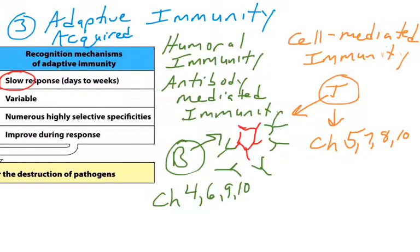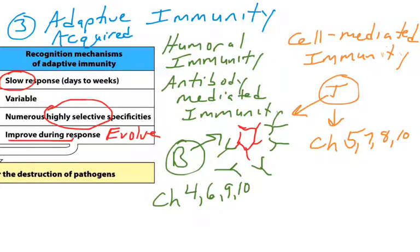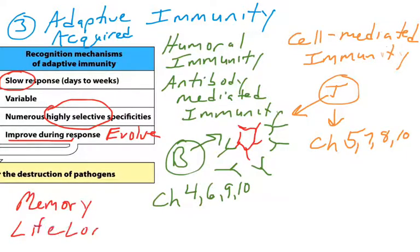The thing about adaptive immunity is that its ability to recognize and unleash an attack usually takes days, if not weeks. So it's a very slow process. While innate immunity is going on trying to keep the pathogen in check, adaptive immunity is developing as well. But once adaptive immunity unleashes its attack, it's very specific — selective for the pathogen, it matches the pathogen, and it's very effective because it evolves to fit the pathogen. Both humoral and cell-mediated adaptive immunity are what provide a person with lifelong protection or immunological memory.